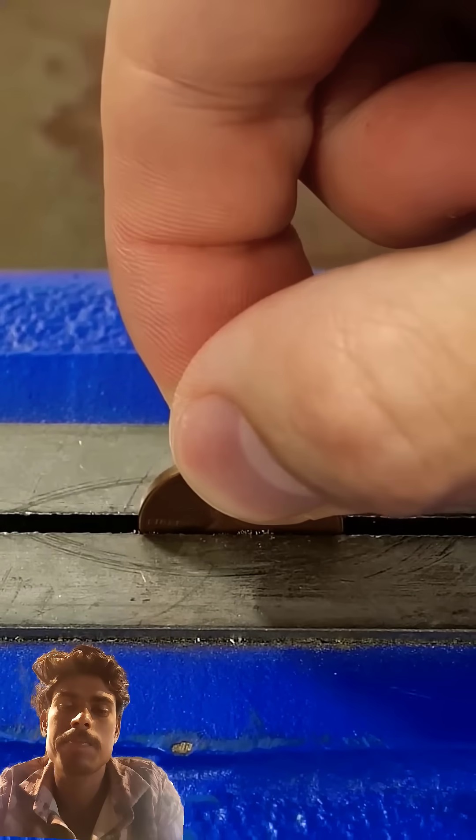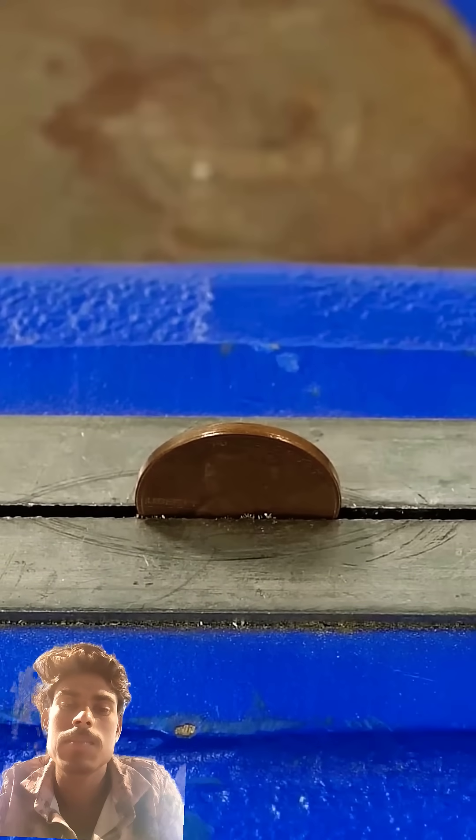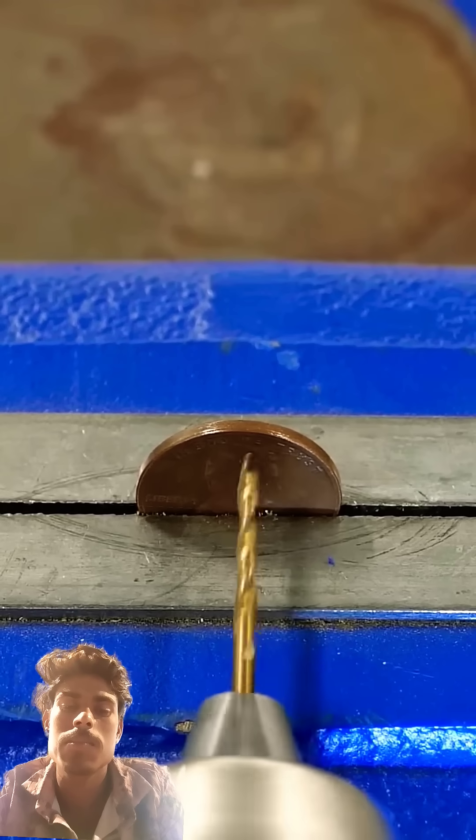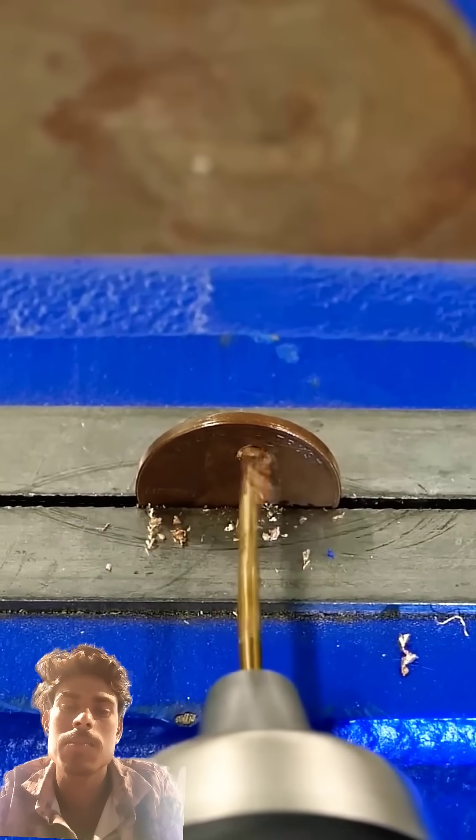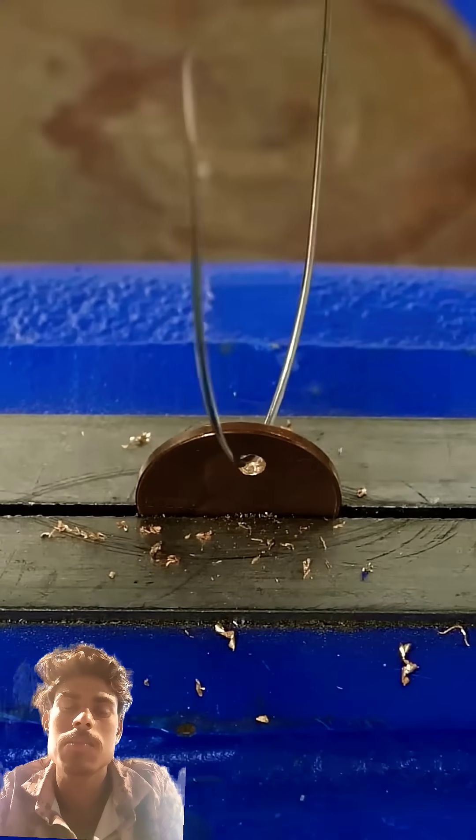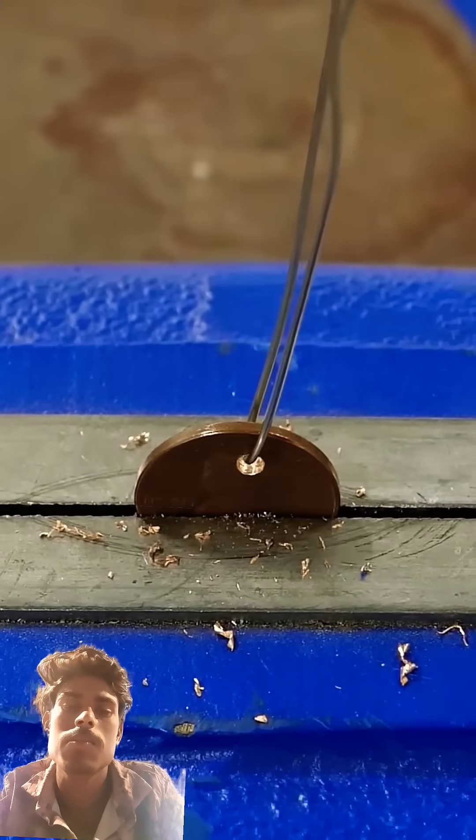Now, I can prep the penny. All I need to do is clamp it down and drill a small hole in it. I'll then put some metal wire through the hole, and the penny's good to go.